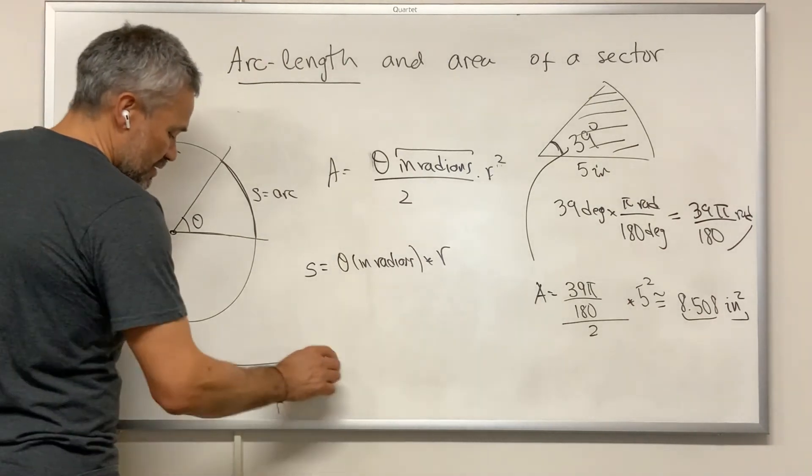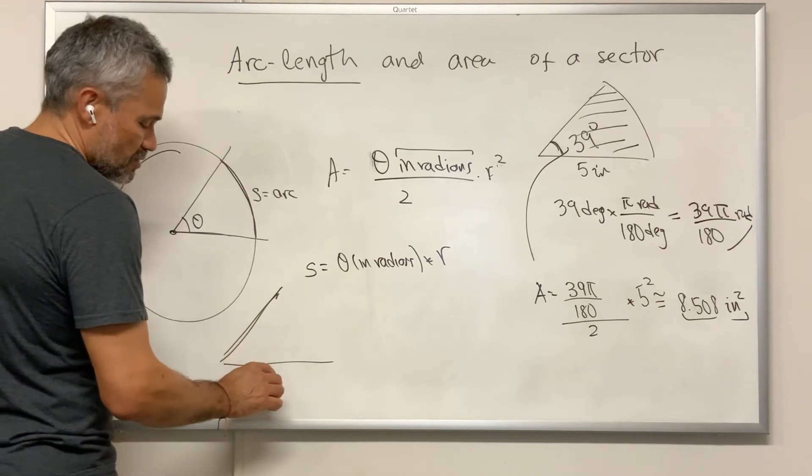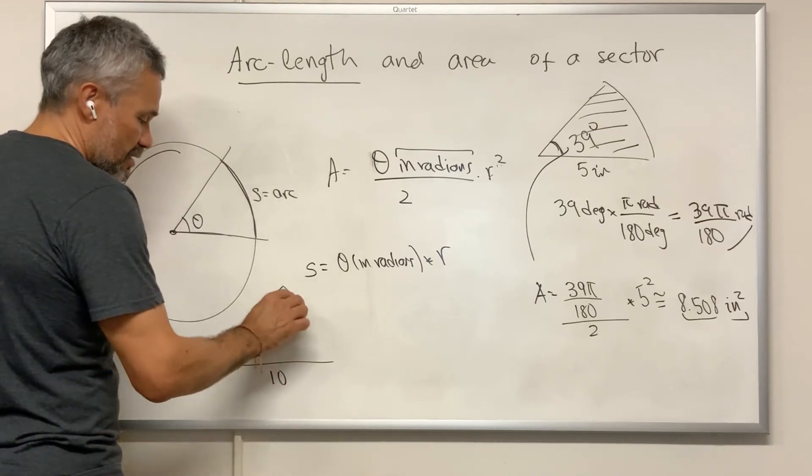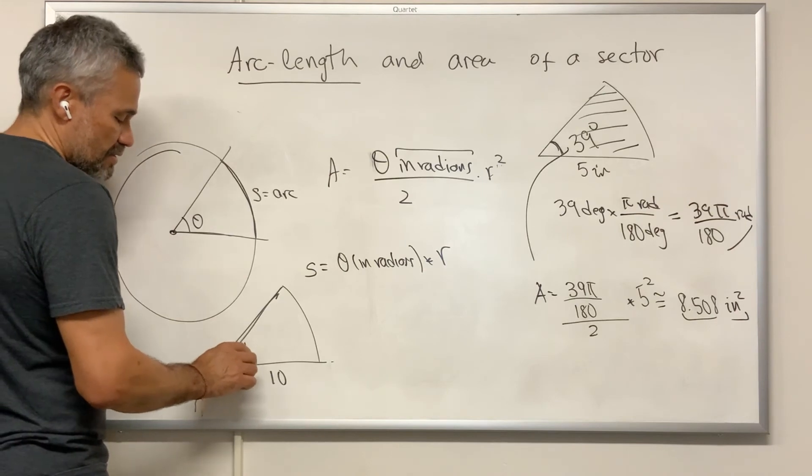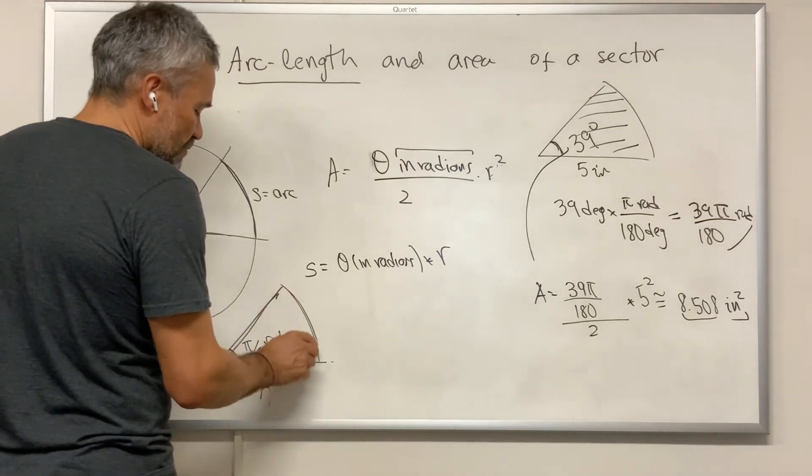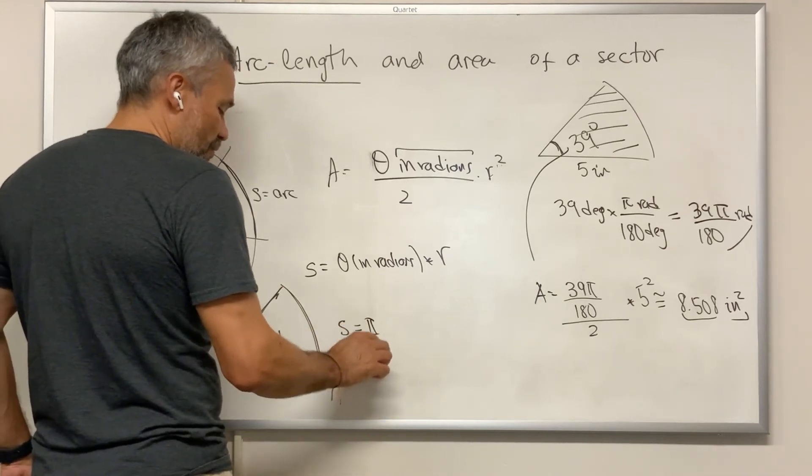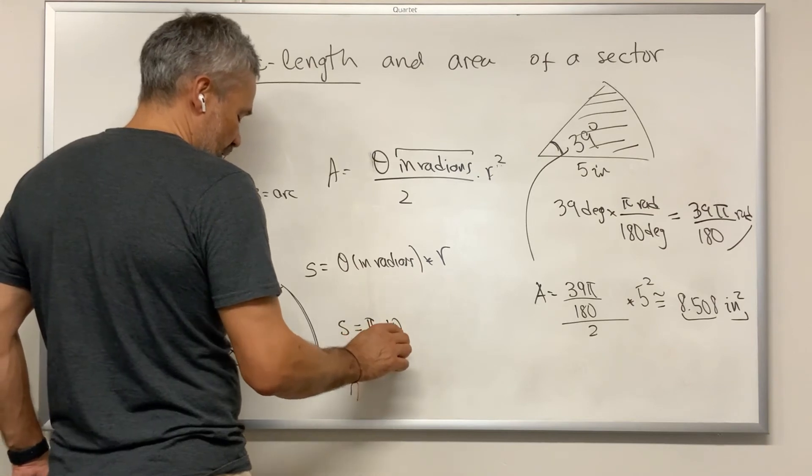If we have that we have a circle of radius 10 and this angle is π over 4 radians, then this distance would be s is equal to π over 4 times 10.